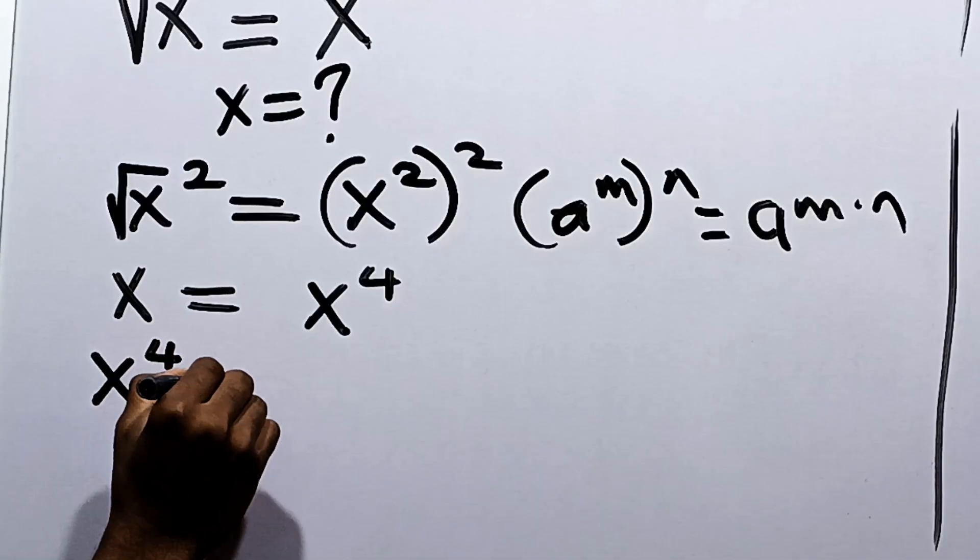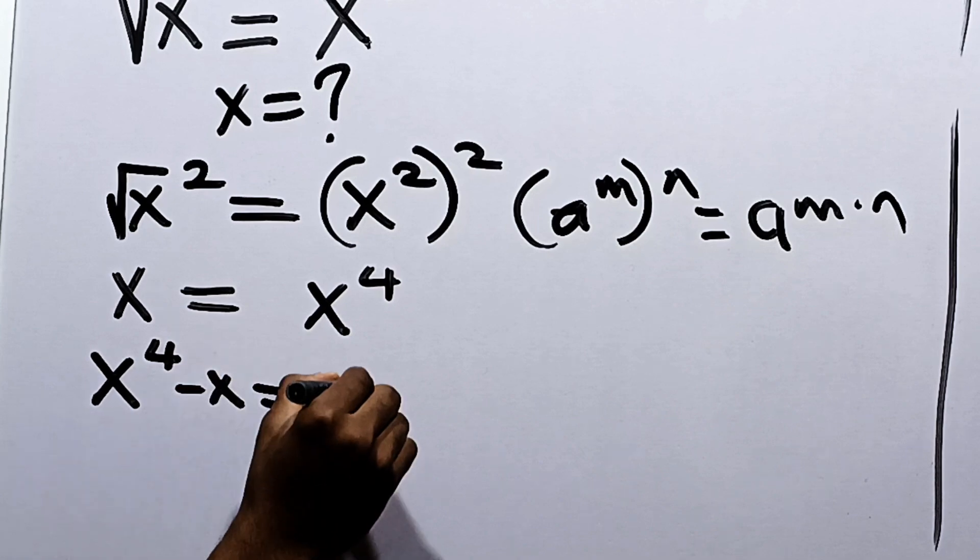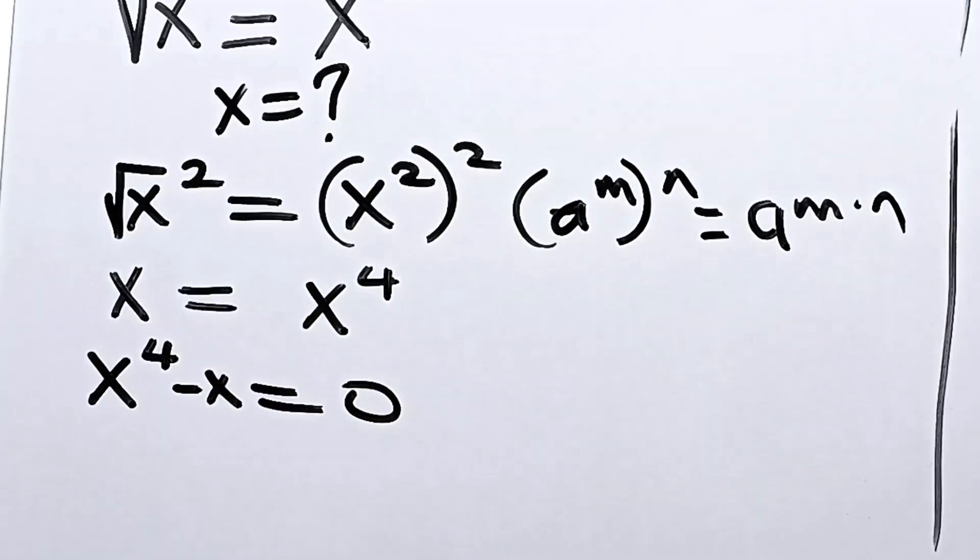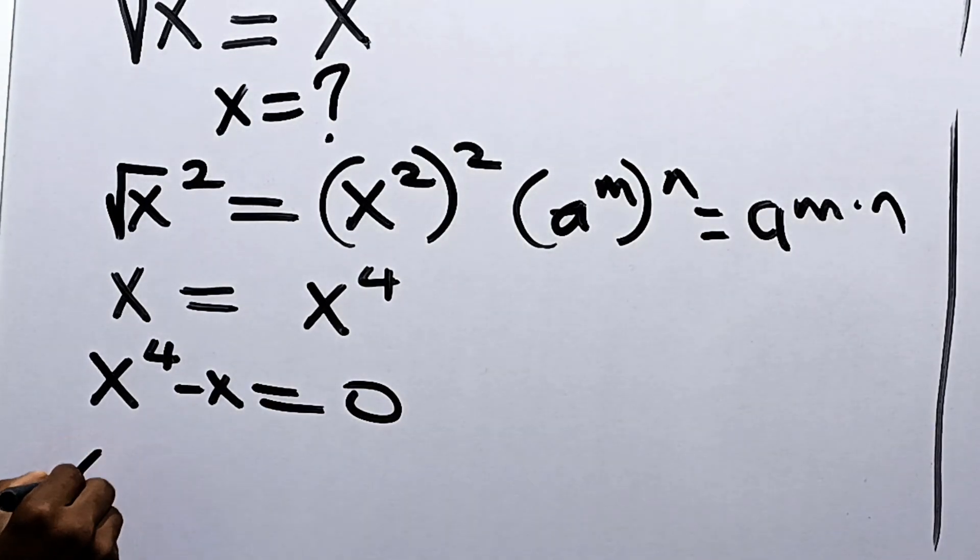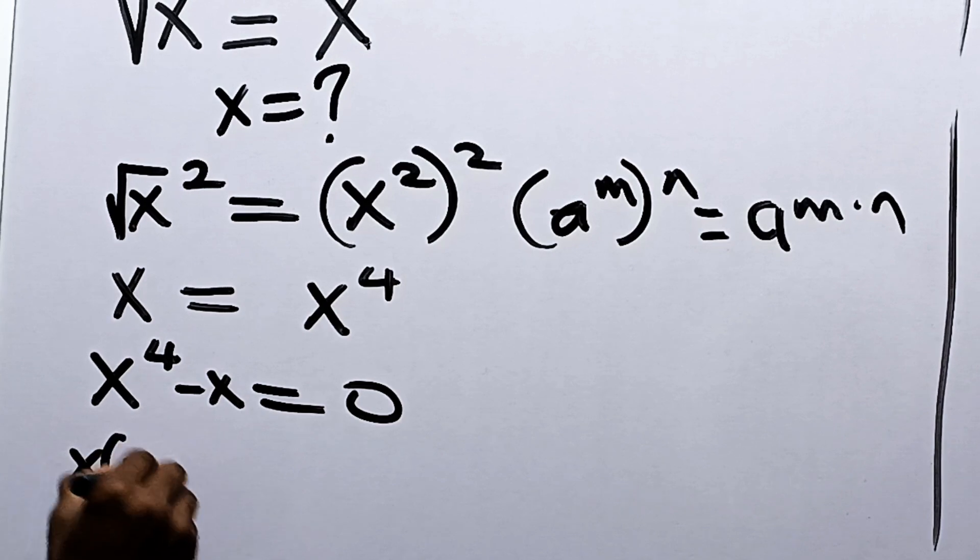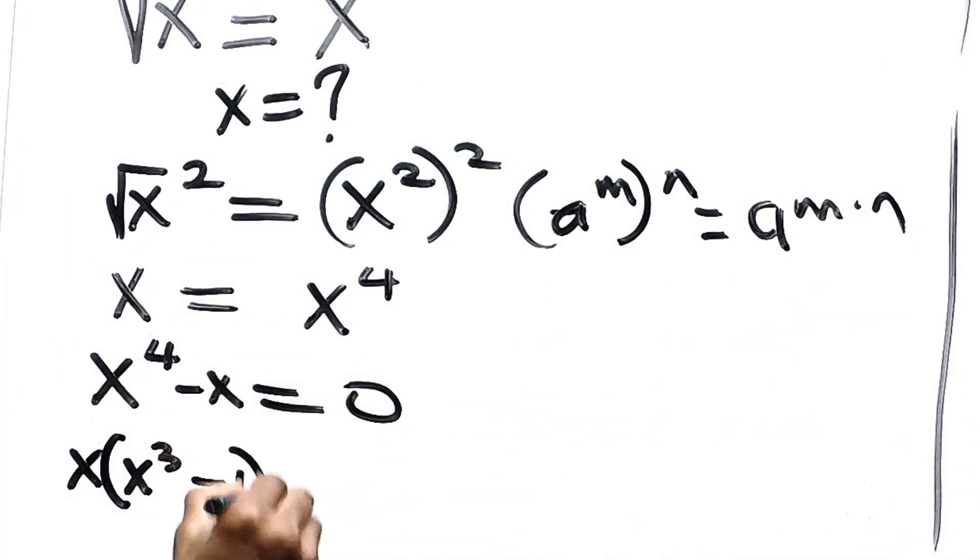And we have x to the fourth minus x to be equal to 0. From here, we can now factor out x to give us x into x cubed minus 1 to be equal to 0.